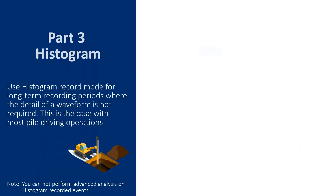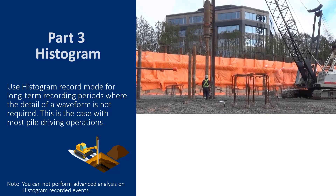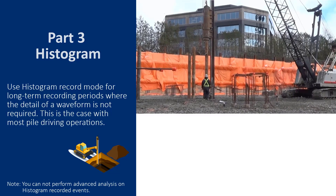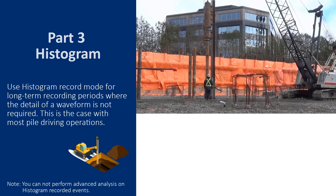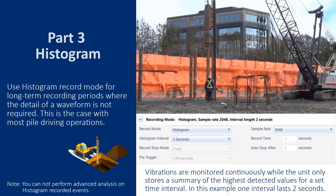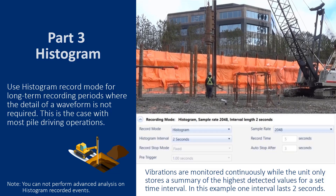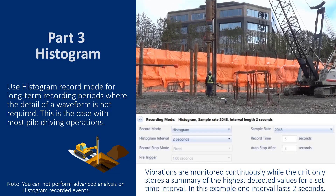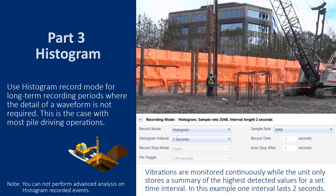The third record mode is Histogram. Use Histogram record mode for long-term recording periods where the detail of a waveform is not required. This is often the case in pile driving operations. Vibrations are monitored continuously while the unit only stores a summary of the highest detected values for a set time interval.